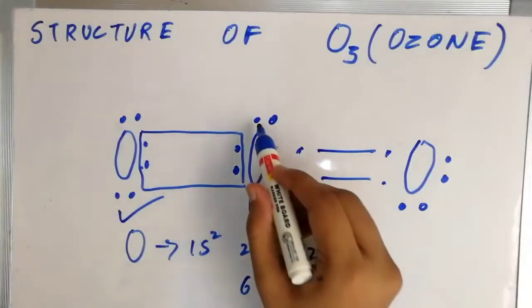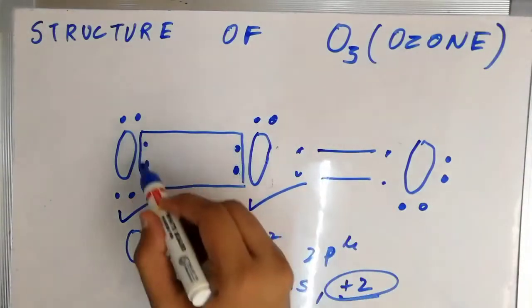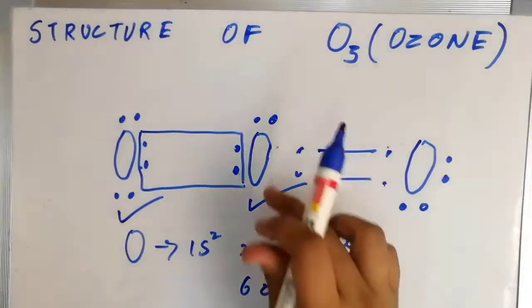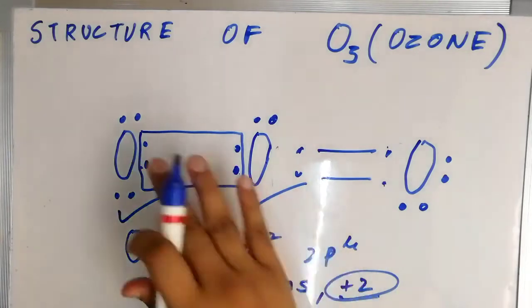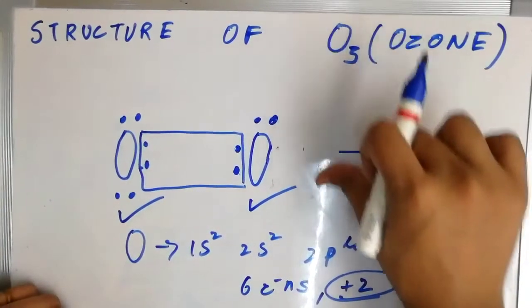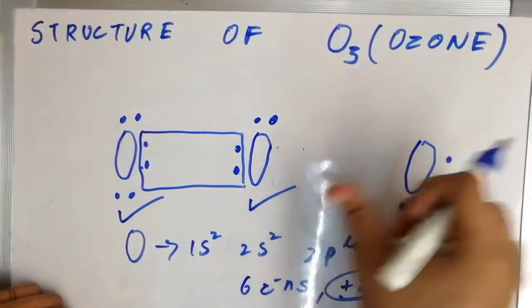But you'll see that this oxygen atom will actually have ten valence electrons one two three four five six seven eight and nine ten. So an oxygen in the second shell, the maximum valence electrons can be ten. So this is not possible. So I'm going to erase it and rewrite it.